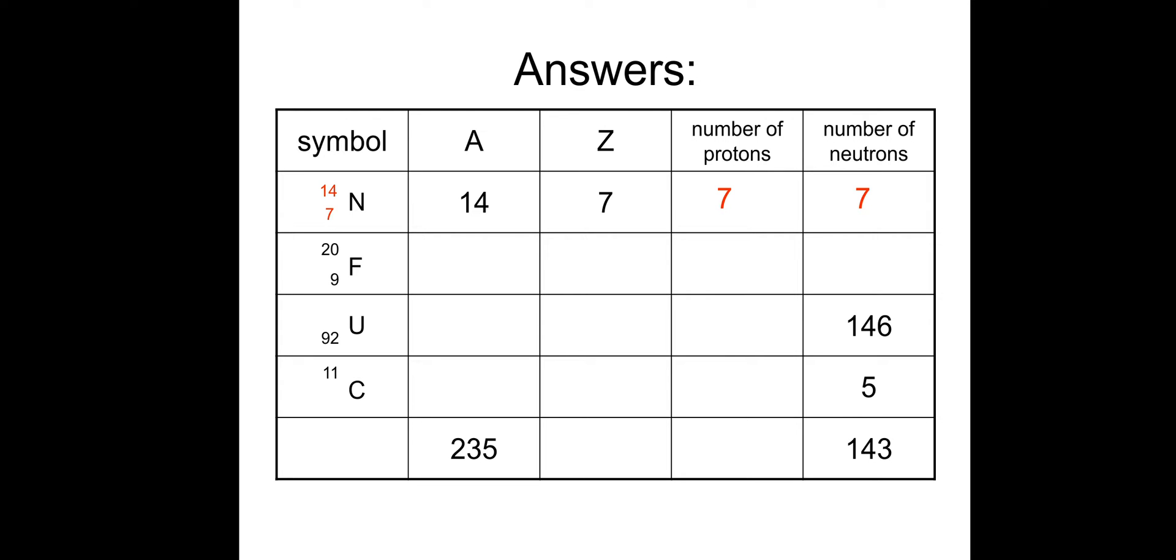So I'll look at the next one. Mass number 20, Z number of 9. So our number of protons is really easy, 9. Number of neutrons is the difference between the A and Z, which would be 11. So the next one. A will be 238. We just add the 146 and the 92. The Z number is the number of protons, which we already have, 92. Number of protons, again we already have it. For the symbol, just put the 238 in.